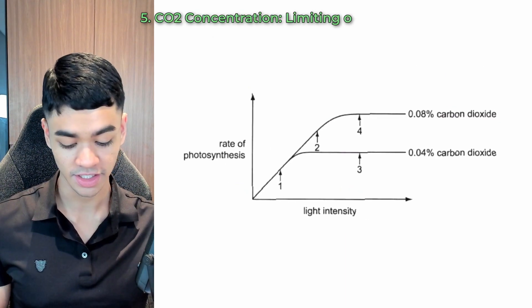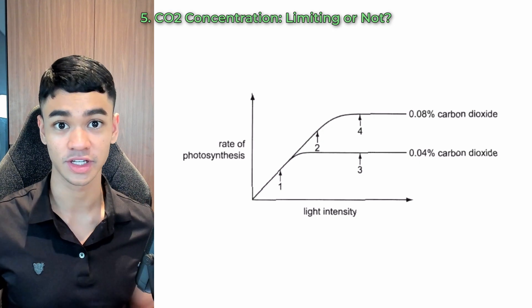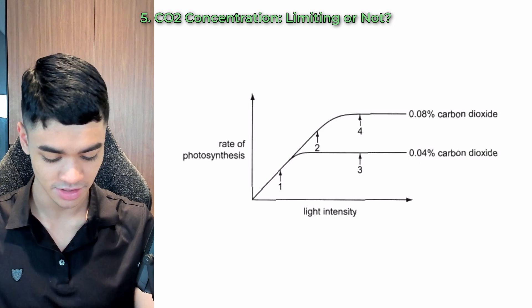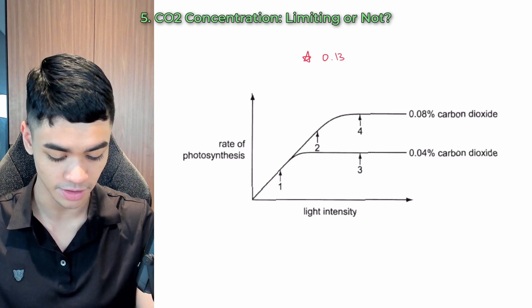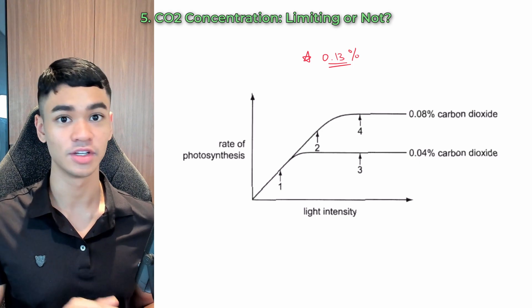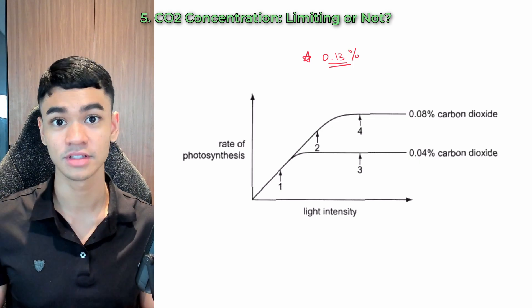Imagine you see this question and it asks you, at which of these points is CO2 concentration a limiting factor? Super easy way to do this. Just remember this magic number, 0.13%. So if CO2 is at this level or higher, it is no longer limiting because there's more than enough CO2. If it's under this number, then yes, it is a limiting factor.